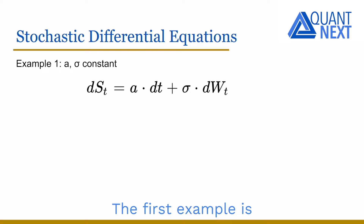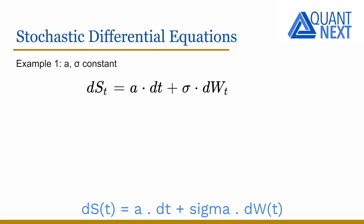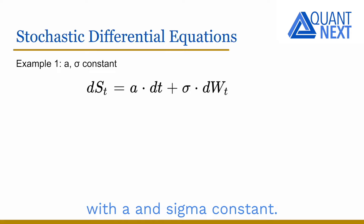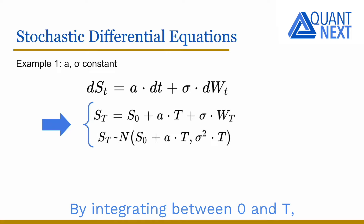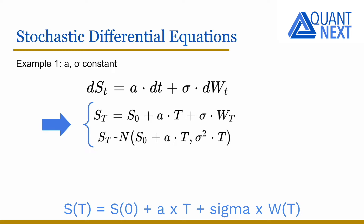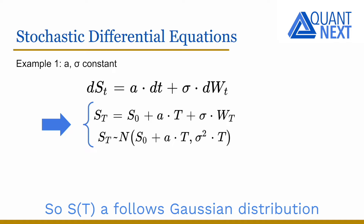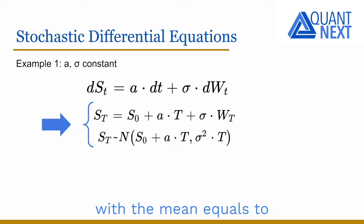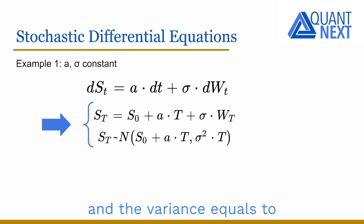The first example is dS_t equal to a dt plus sigma dW_t, with a and sigma constant. By integrating between 0 and t, we get S_t equal to S_0 plus a times t plus sigma times W_t. So S_t follows a Gaussian distribution with a mean equal to S_0 plus a times t, and a variance equal to the square of sigma times t.